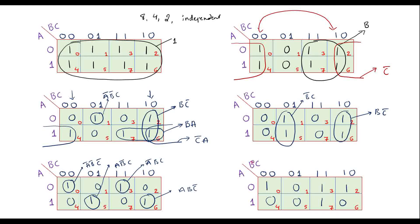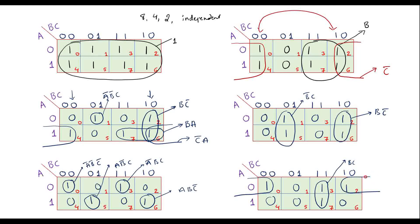Now consider one more example. Here we can do two 1s as a pair. The value of this pair with respect to its column is BC. We also find another 1 and another 1 that can form a pair. The value of this pair belongs to row A-bar and column B C-bar, giving A-bar B C-bar.